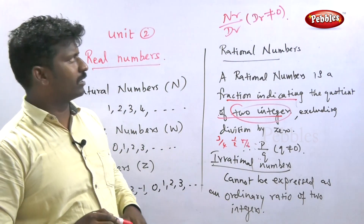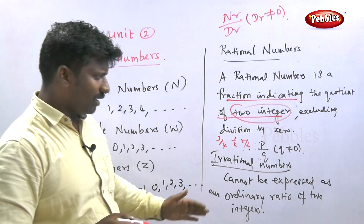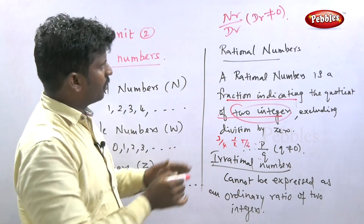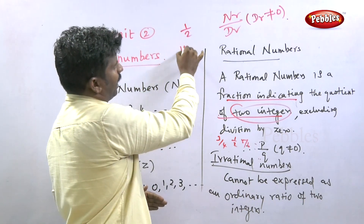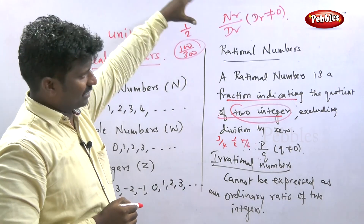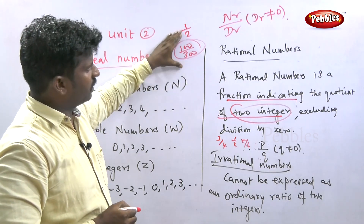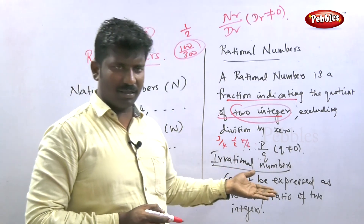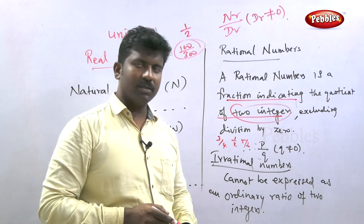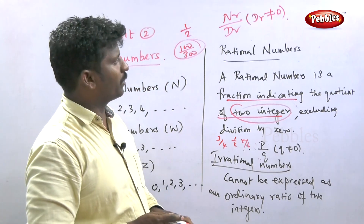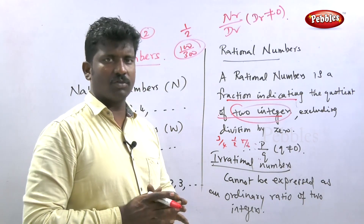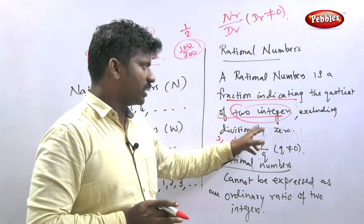Irrational numbers cannot be expressed as an ordinary ratio of two integers. Rational numbers can be expressed as a ratio like one by two, or one hundred by three hundred. Irrational numbers may produce the most repeated decimal numbers. Rational numbers are fractions of two integers, excluding division by zero.